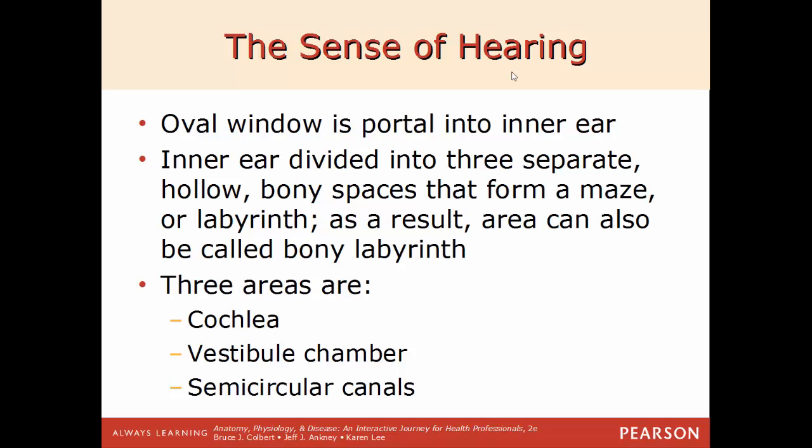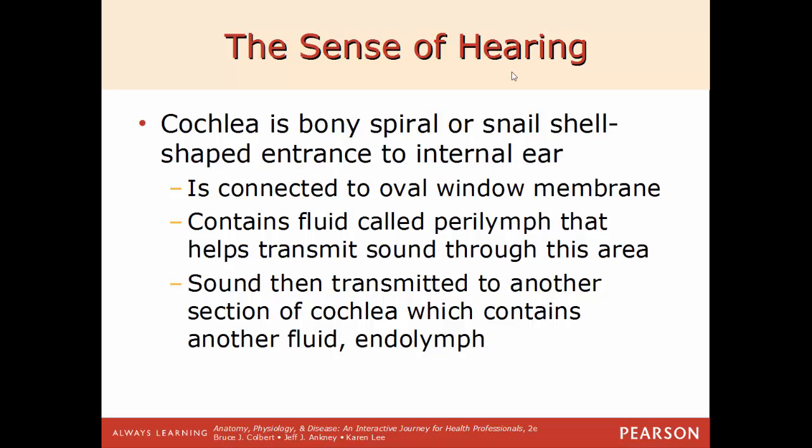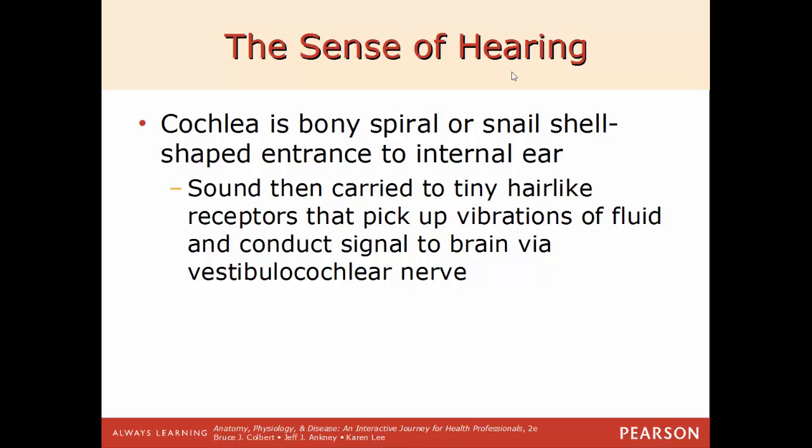The oval window is the portal into the beginning of the inner ear. The inner ear has three separate hollow bony spaces forming a labyrinth or maze — called the bony labyrinth. These three areas are the cochlea, the vestibule chamber, and the semicircular canals. The cochlea is a bony, snail shell-shaped structure connected to the oval window membrane. Inside the cochlea you'll find perilymph fluid that helps transmit sound, which then transmits to another section containing endolymph fluid. Sound is then carried to tiny hair-like receptors that pick up the vibrations, converting them into electrical impulses traveling to the brain via the vestibulocochlear nerve.